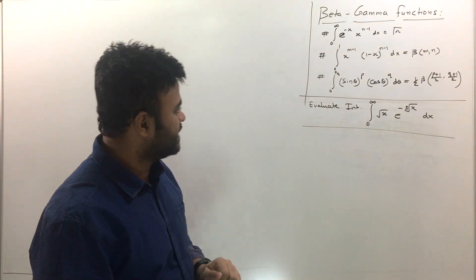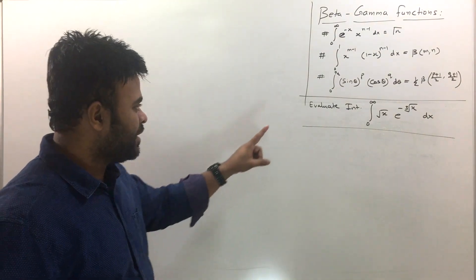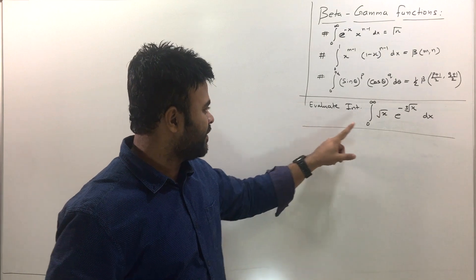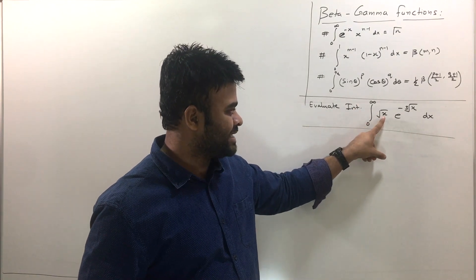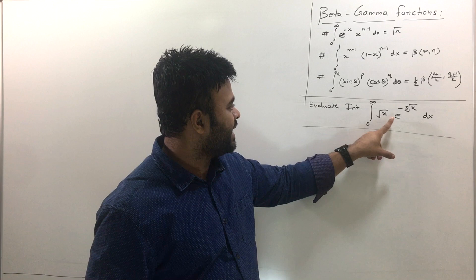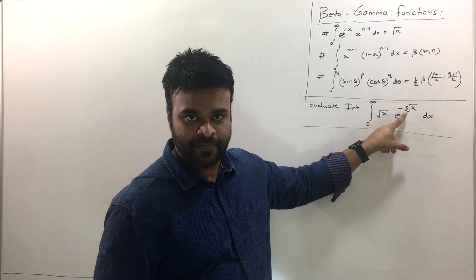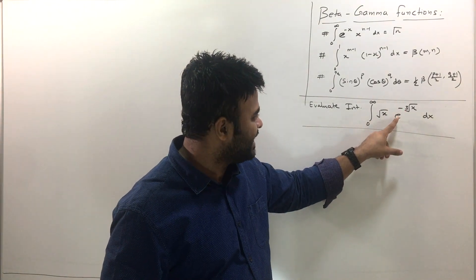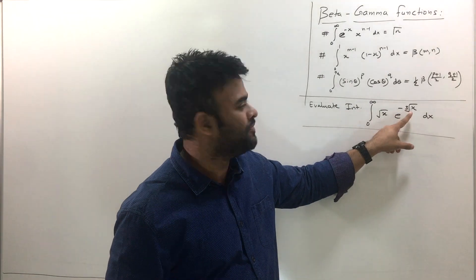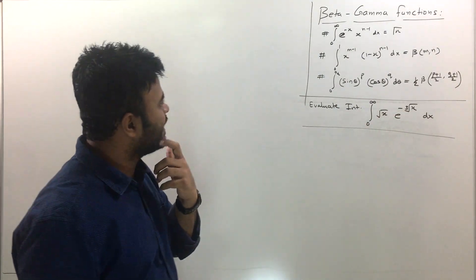Now let us solve this question here. The question is an indefinite integral and integration is going from 0 to infinity. I see this is x raised to half, and then e raised to some power. Now you have e raised to minus of cube root of x, which is not exactly falling into any form.